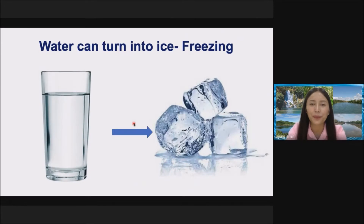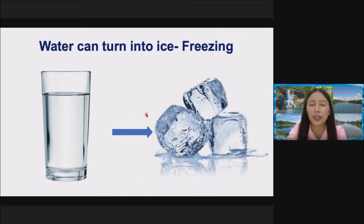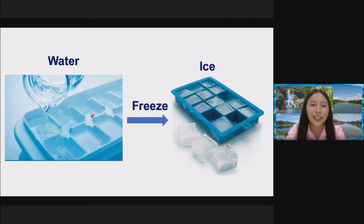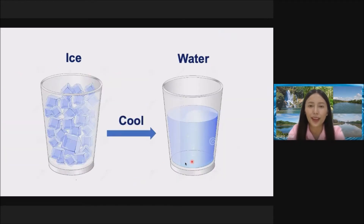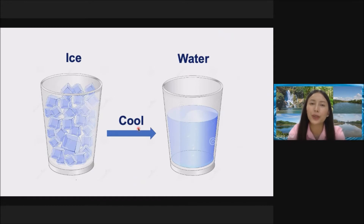We have seen that water can turn into ice and that process is called freezing. How do you get ice? For example, you get ice by putting water in the freezer. You put water in here and when you freeze it, you get ice. And also you can turn ice into water by cooling the ice down.